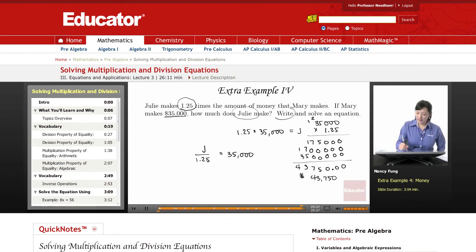So here we've written an equation. j, Julie's amount, divided by 1.25 equals 35,000. The opposite of dividing by 1.25 is to multiply by 1.25. And those cancel, and we've isolated j.